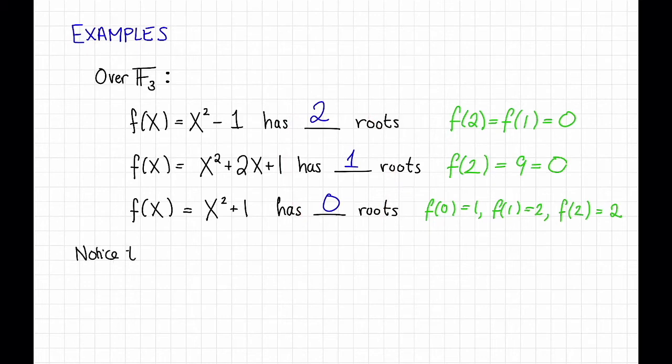Notice also that this last polynomial, x^2 + 1, does have a root in f_2, because 1 + 1 = 0 mod 2, so f(1) = 0 mod 2. So this shows that the choice of field matters for the number of roots of a polynomial.